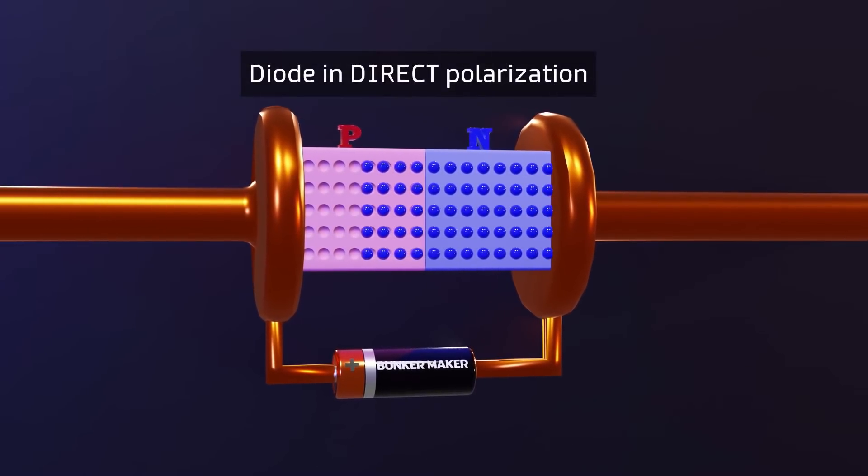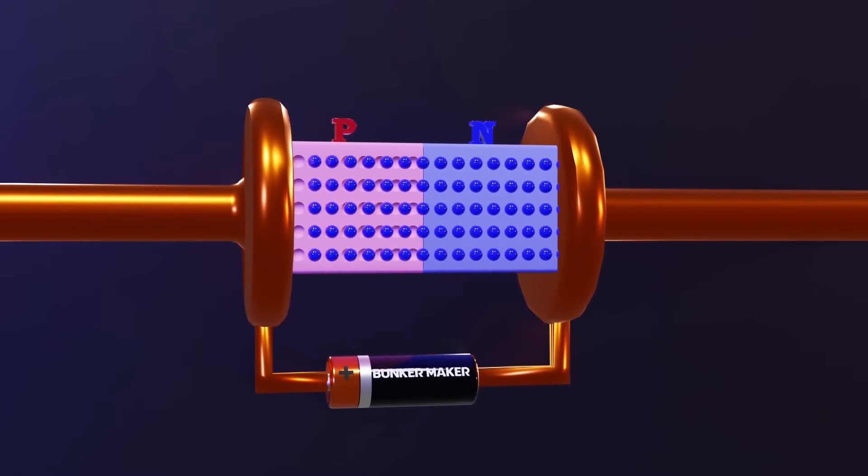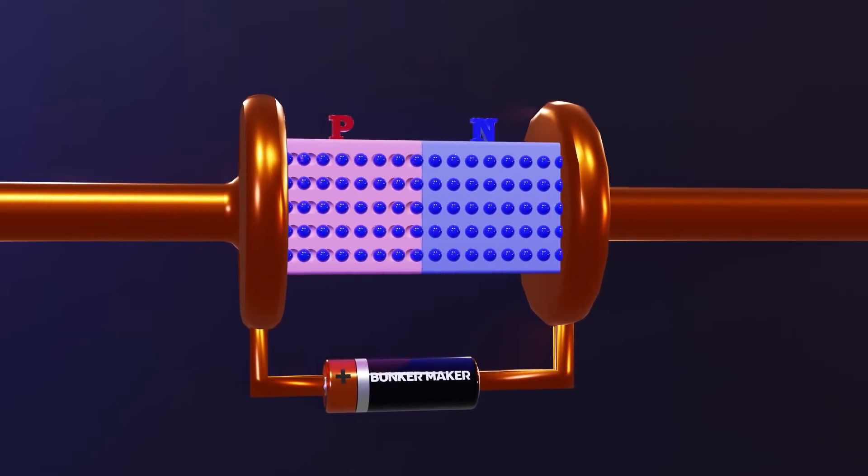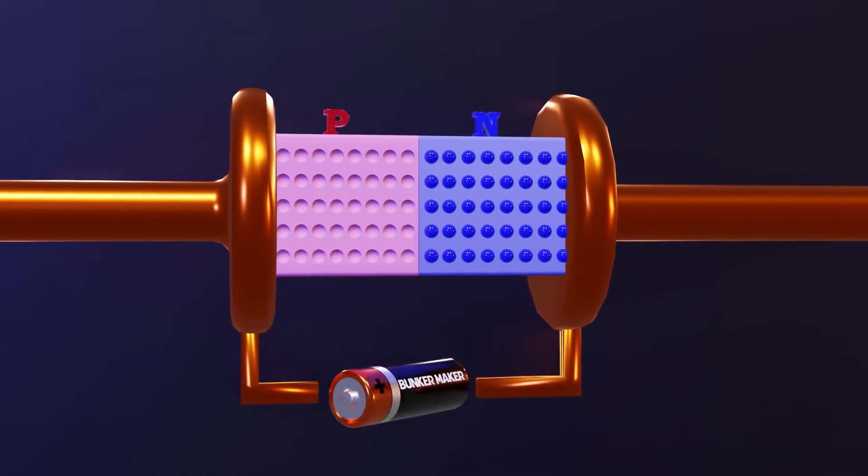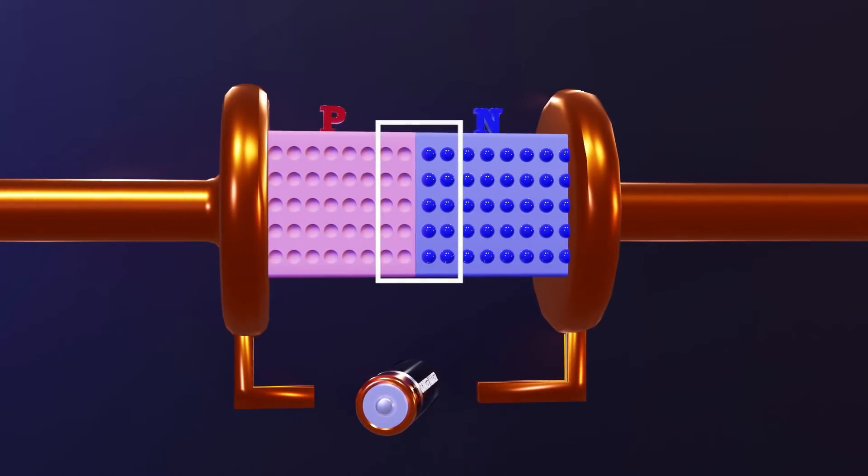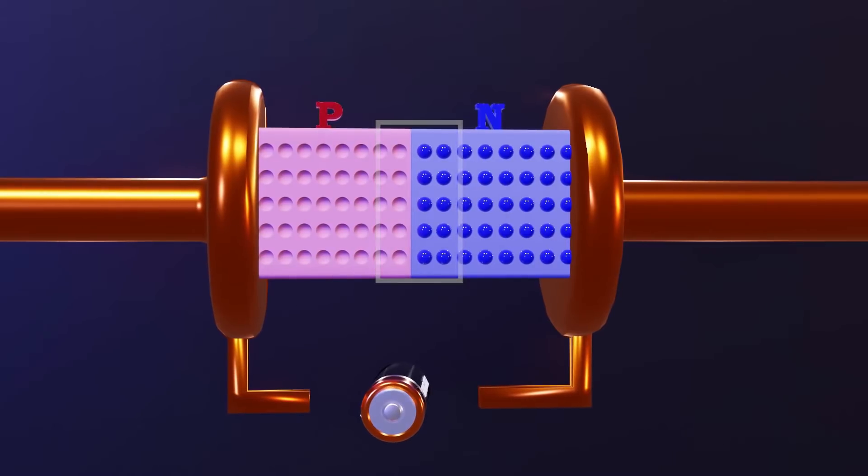Basically this is how a diode works, and for those who have followed the other videos of the channel, sorry for explaining it for the third time. But this time I want to go deep into something that I did not give much importance in the previous videos, the depletion zone or depletion layer which is precisely the area in which both semiconductors come into contact.